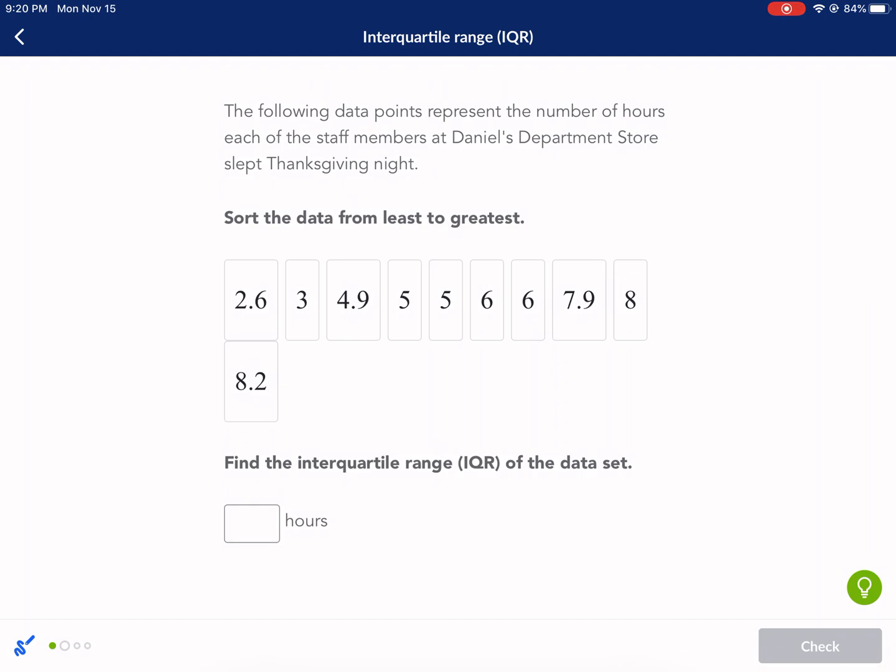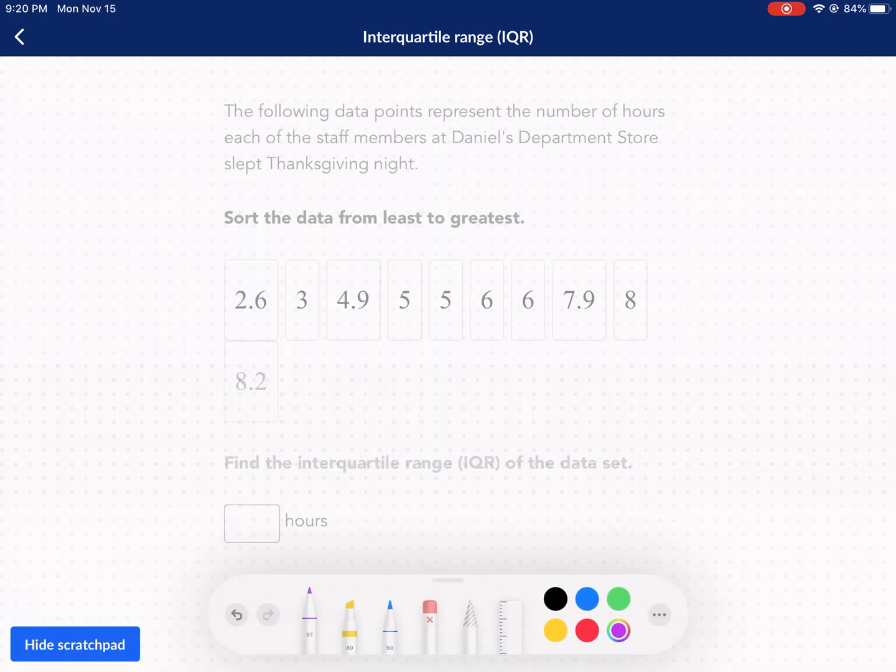All right, now find the interquartile range of the data set. Well, first off, I'm so annoyed that this 8.2 is in here. Okay, so then I have to find the median, so I'm going to cross them off.